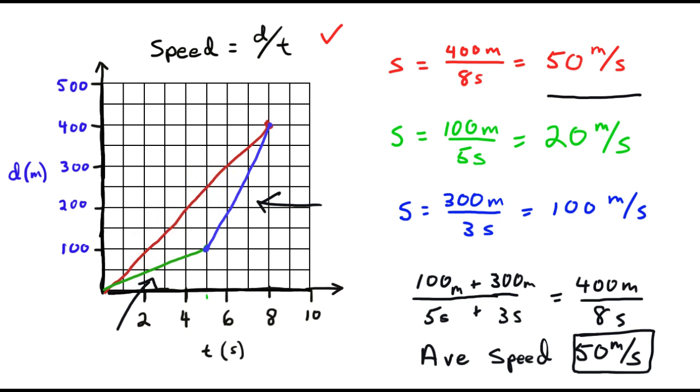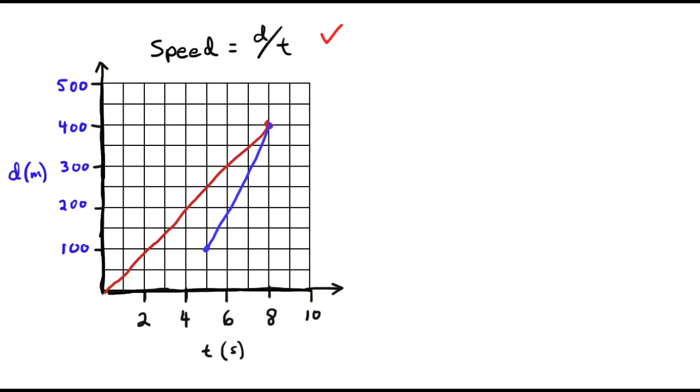So now if we take a completely different look at this and we erase some of this stuff. So if we take a different look. And again, the red was 400 meters in the 8 seconds. And they came out to 50 meters per second. If we took a different path.